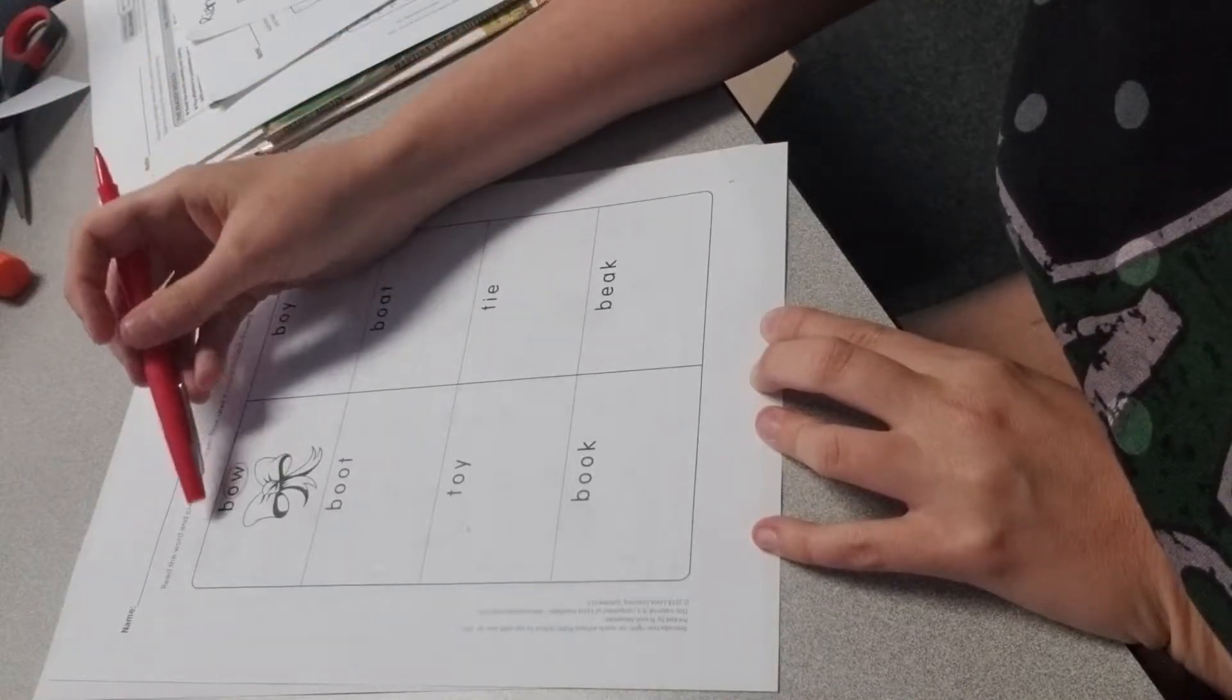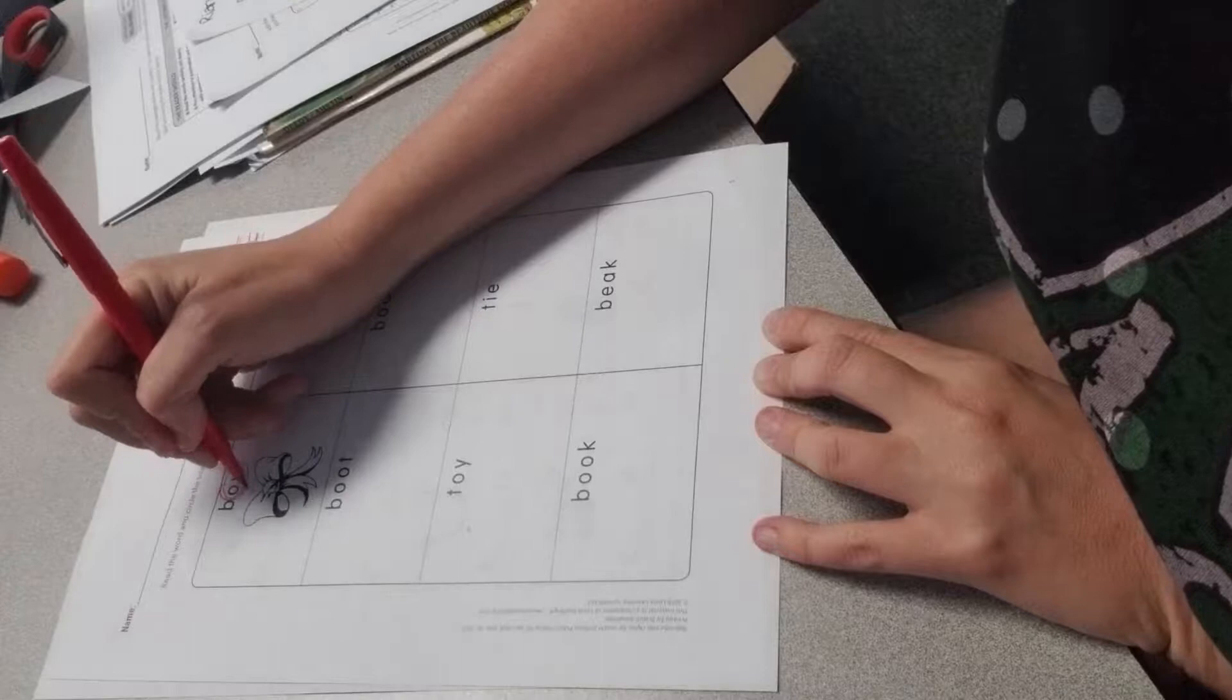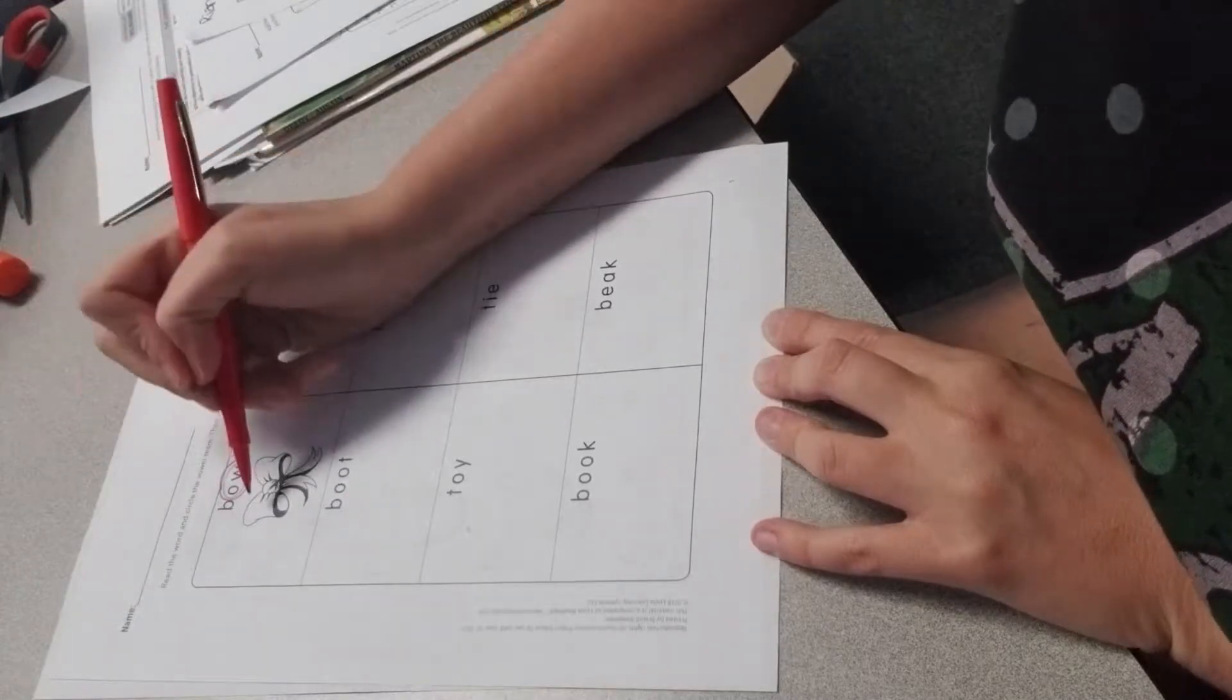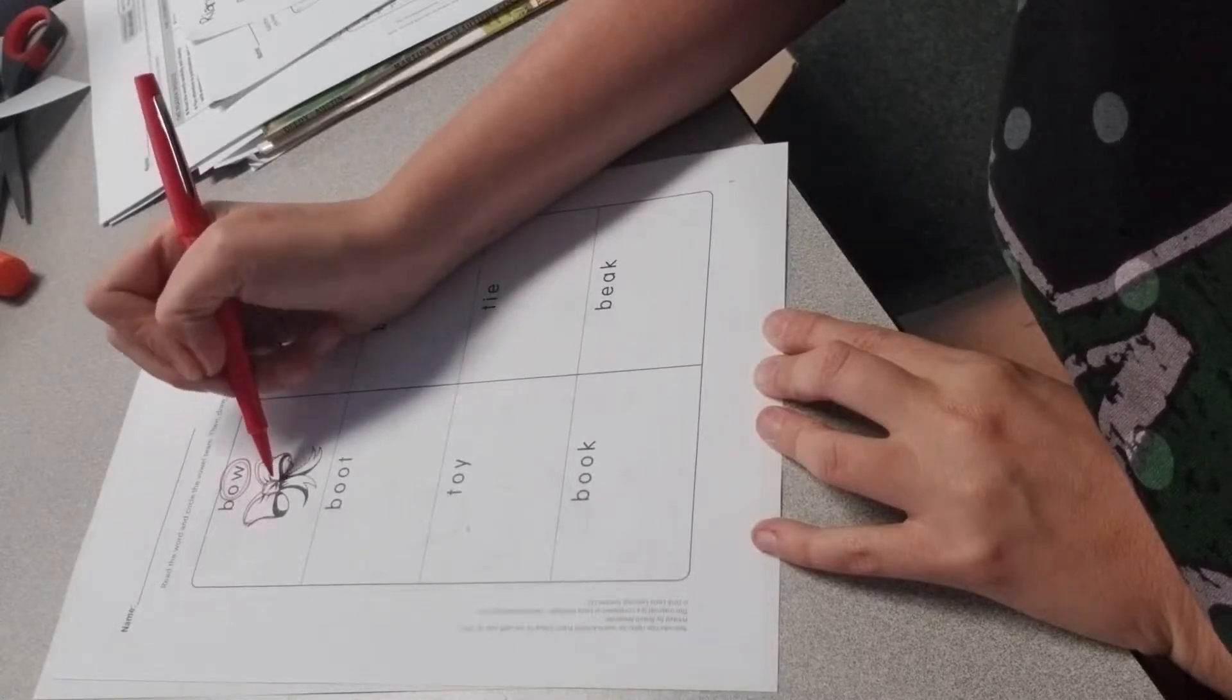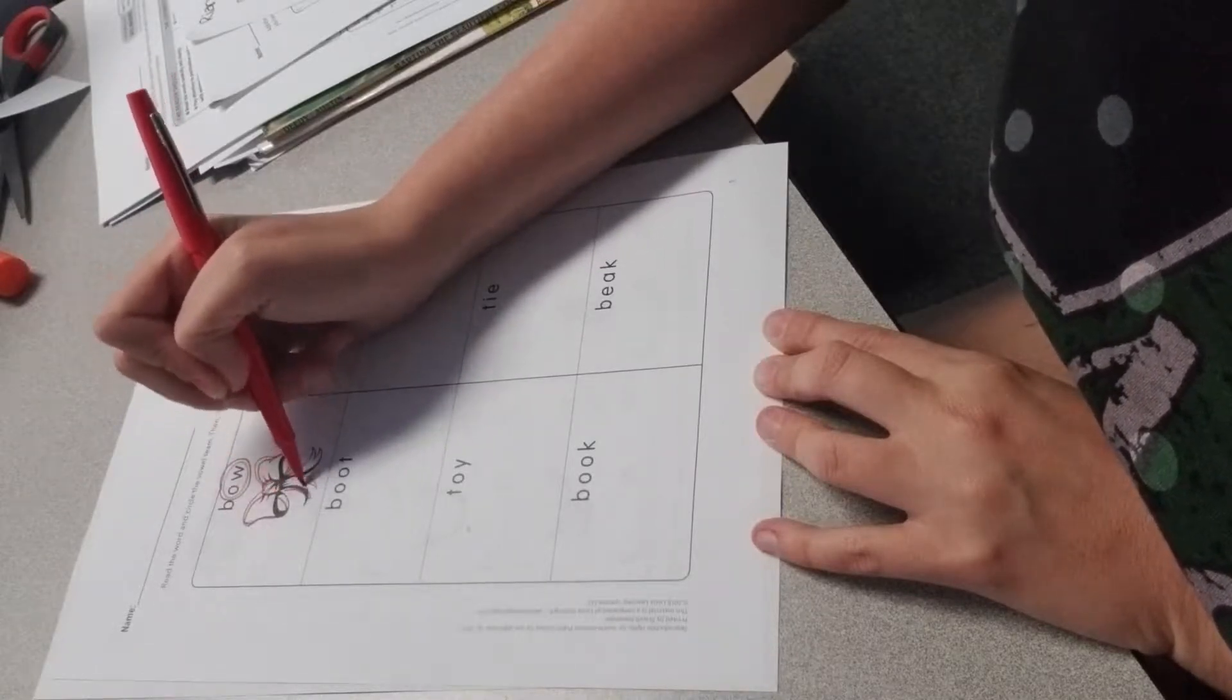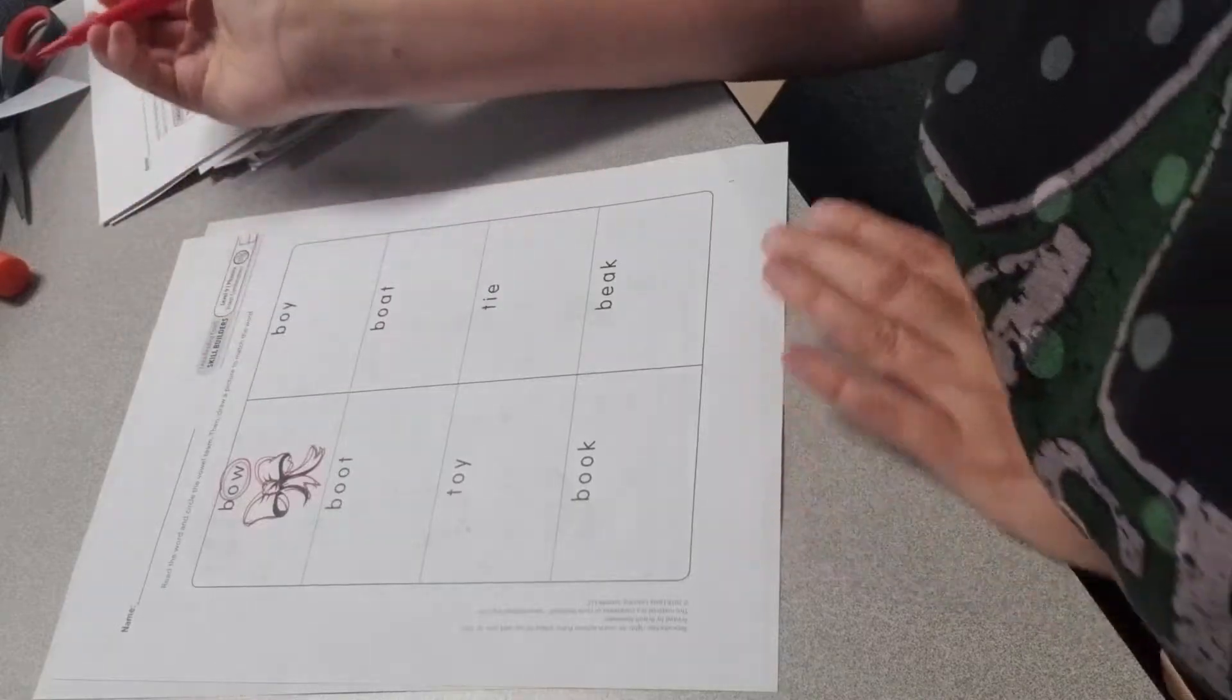So the first one's been done for us, bow. The vowel combination is the O-W, so you circle that. And then they drew this beautiful picture of a bow. All right. Feel free to color it if you want.